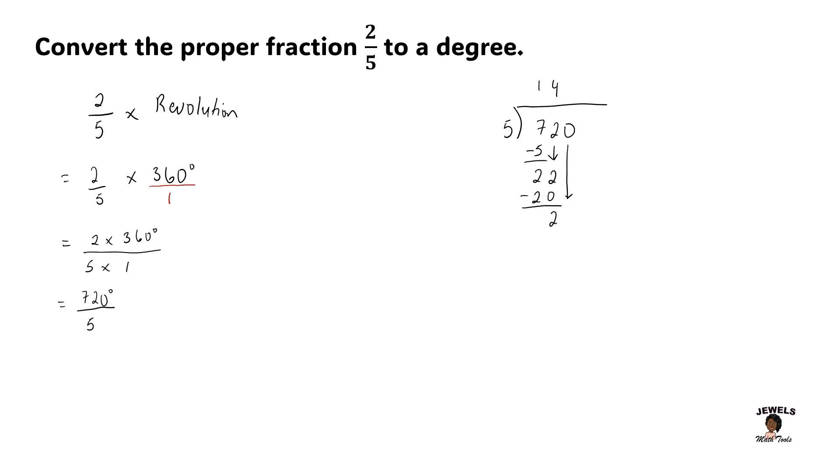We're going to bring down our 0, changing 2 into 20. 5 will go into 20 four times. 4 times 5 is 20, and 20 minus 20 will equal 0.